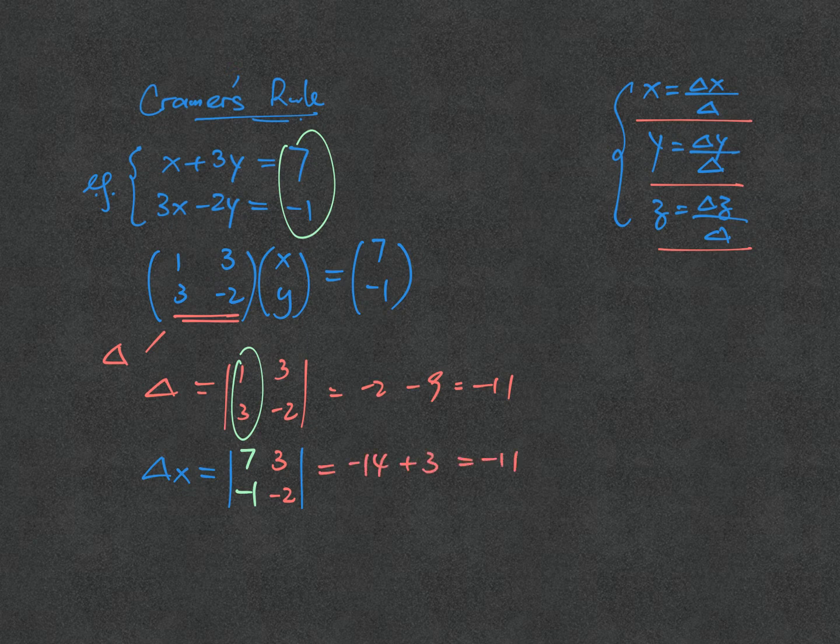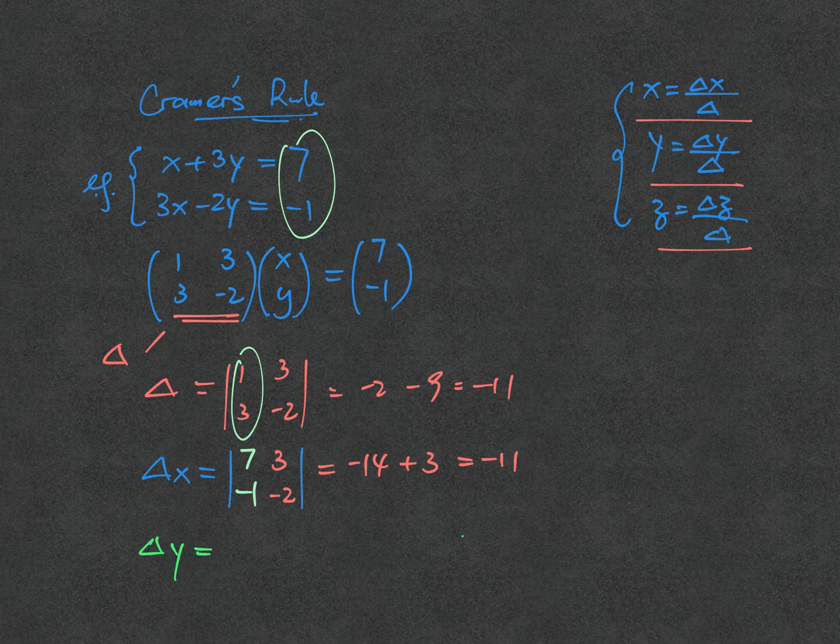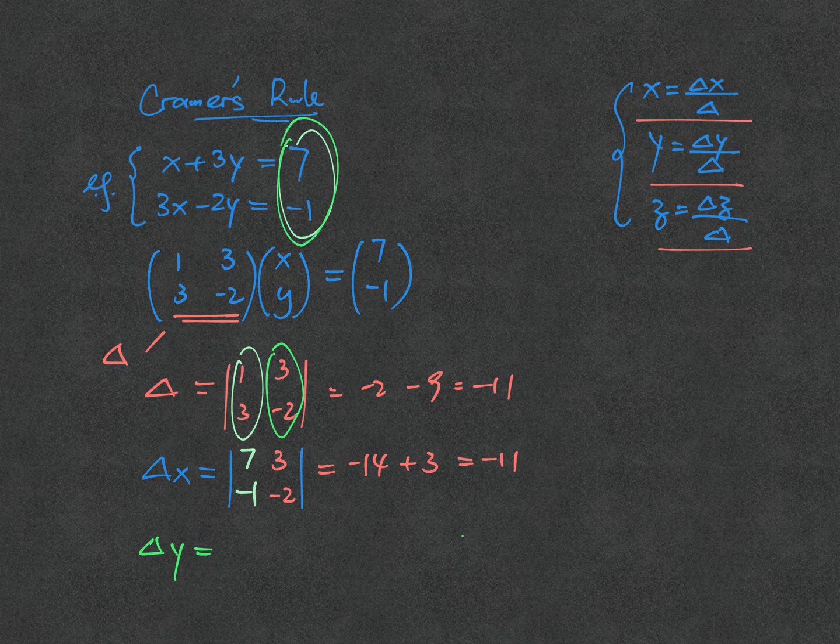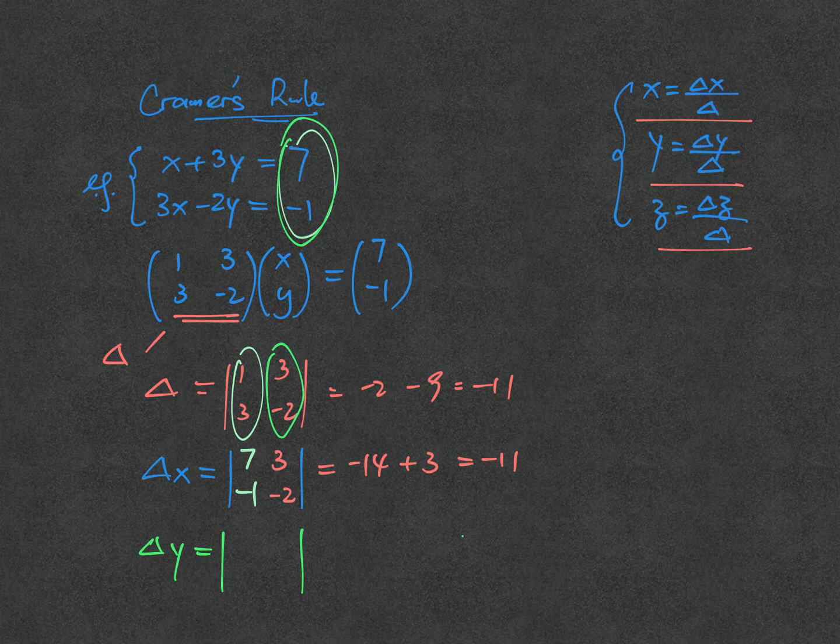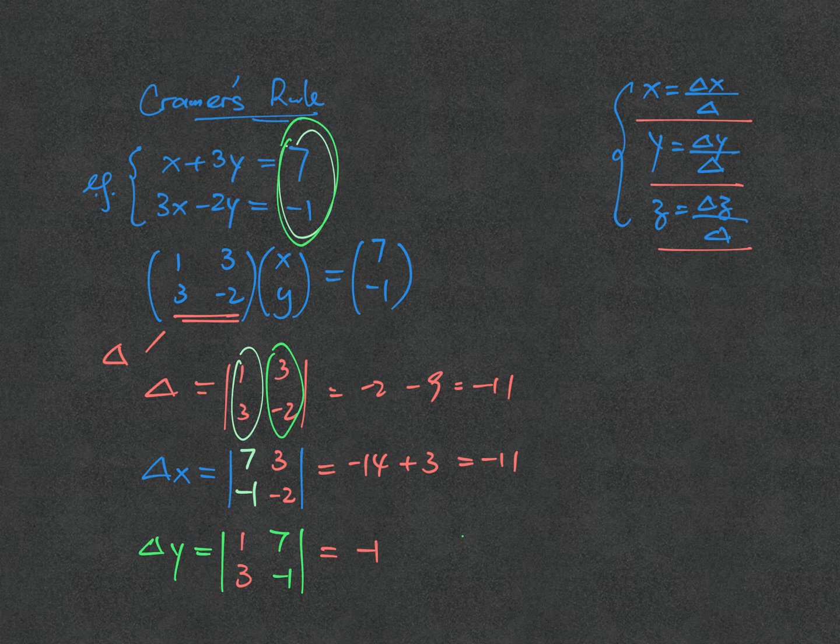Similarly, for delta y, we replace the determinant numbers 3, minus 2 by 7, minus 1. So it's 7, minus 1, whereas the numbers 1, 3 still use the 1 from the matrix itself. This gives minus 1, minus 21, which is negative 22.